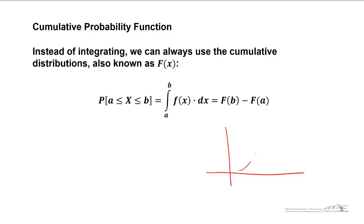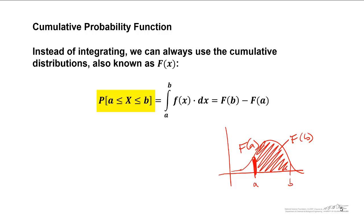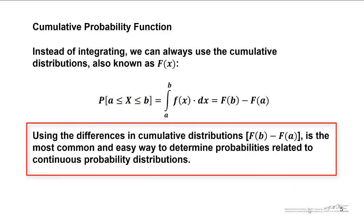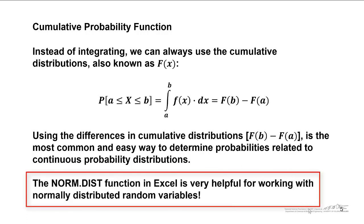In other words, if you wanted to calculate the probability that the random variable lies between a and b, you would calculate the cumulative capital F all the way up to b — that would be capital F(b) — and then subtract that first bit, which is capital F(a). The difference leaves you with just the probability you are interested in. Using differences in cumulative distributions is the most common and easy way to determine probabilities related not only to the normal distribution, but all sorts of other continuous probability distributions. For the normal distribution, there is a norm.dist function in Excel, and it is very helpful for working with normally distributed random variables.